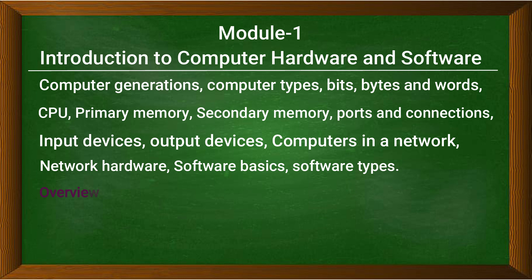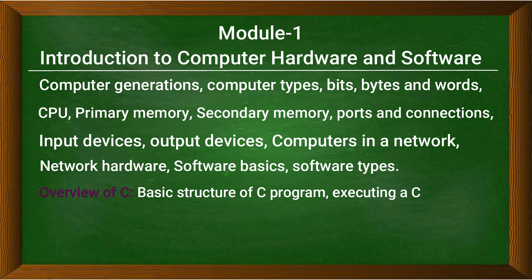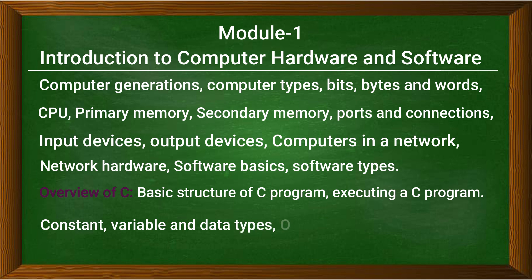After understanding the basics of computers, we are going to have an overview of C. In this overview we are going to understand the basic structure of C programming, how to write a simple program, how to execute a C program, what are constants, variables and data types, the different operators and expressions, and types of functions. This completes module one.